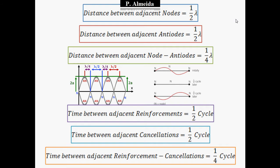The distance between adjacent antinodes will also be one half of a wavelength. And the distance between an adjacent node and antinode will be a quarter of a wavelength. This is just for you to take notes.